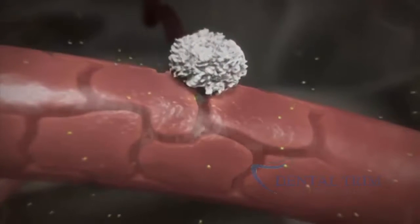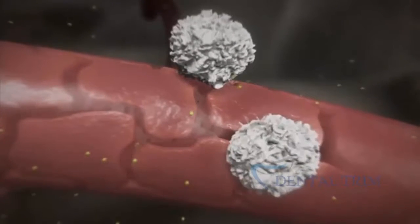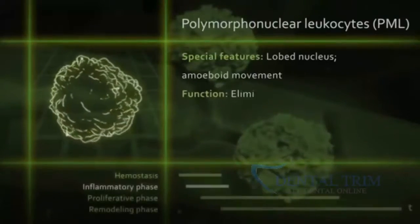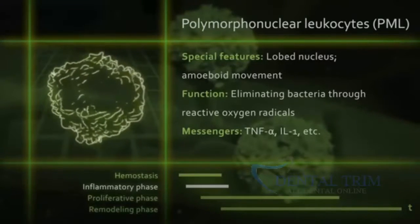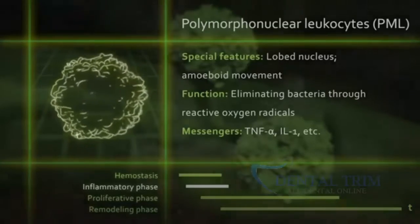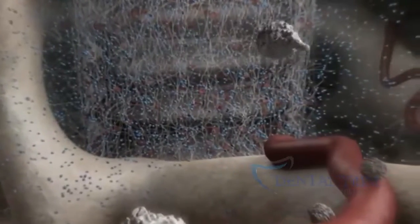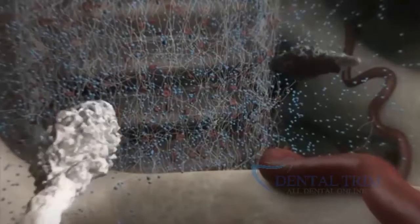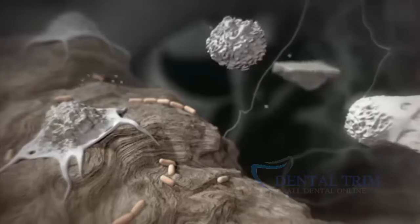On the inside of the vascular walls, endothelial cells promote the attachment of polymorphonuclear leukocytes from the bloodstream. These leukocytes — also known as PMLs — squeeze themselves through the gaps between the endothelial cells. Once they have digested the basal lamina using proteases, they are free to enter the wound. PMLs chemotactically navigate toward the wound along a molecular concentration gradient, including bacterial proteins, fibrinopeptides, and pro-inflammatory interleukins. Upon arrival, they kill bacteria through the release of reactive oxygen species.